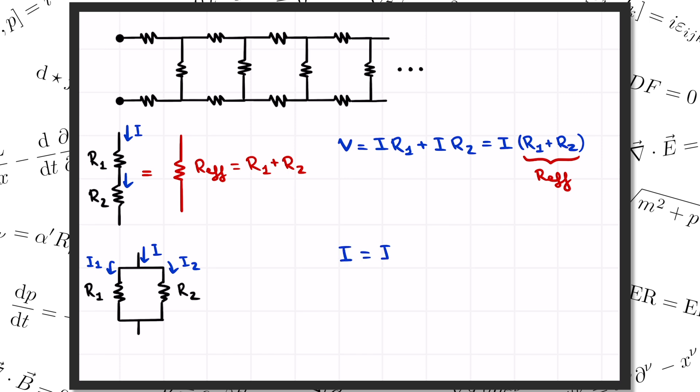So the total current I equals I1 plus I2, and I1 is V over R1, and I2 is V over R2. So we get V times the quantity 1 over R1 plus 1 over R2, and that thing that multiplies V is 1 over the effective resistance. So the effective resistance is 1 over R1 plus 1 over R2, and then we take the inverse of that whole expression.